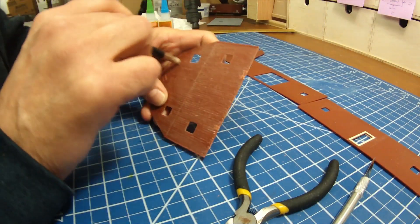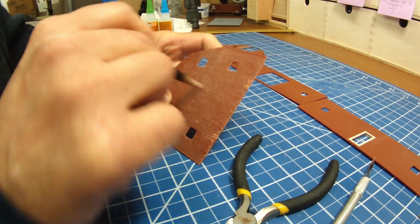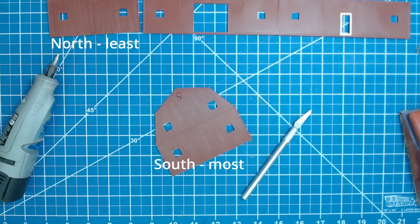Make sure to pick an orientation for the model, and for that matter, the diorama and layout. Remember, the south side gets the most sun, the north side the least, and the weathering should reflect that.